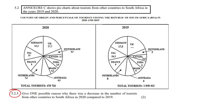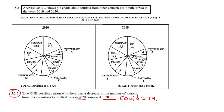The last question asks: give one possible reason why there was a decrease in the number of tourists from other countries in 2020 compared to 2019. This is obviously due to COVID-19 restrictions — 2020 is when COVID hit us, so there would be fewer tourists.